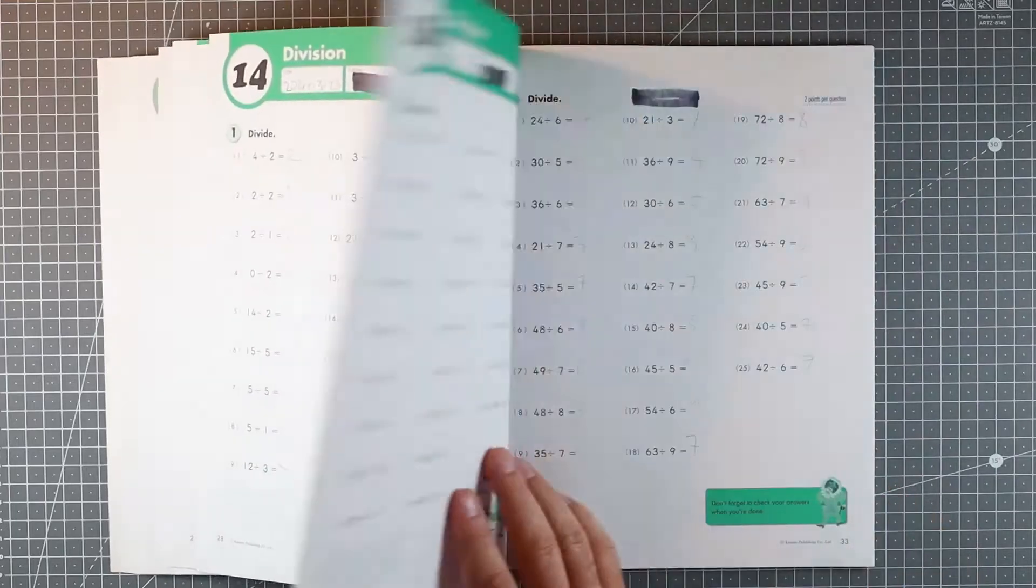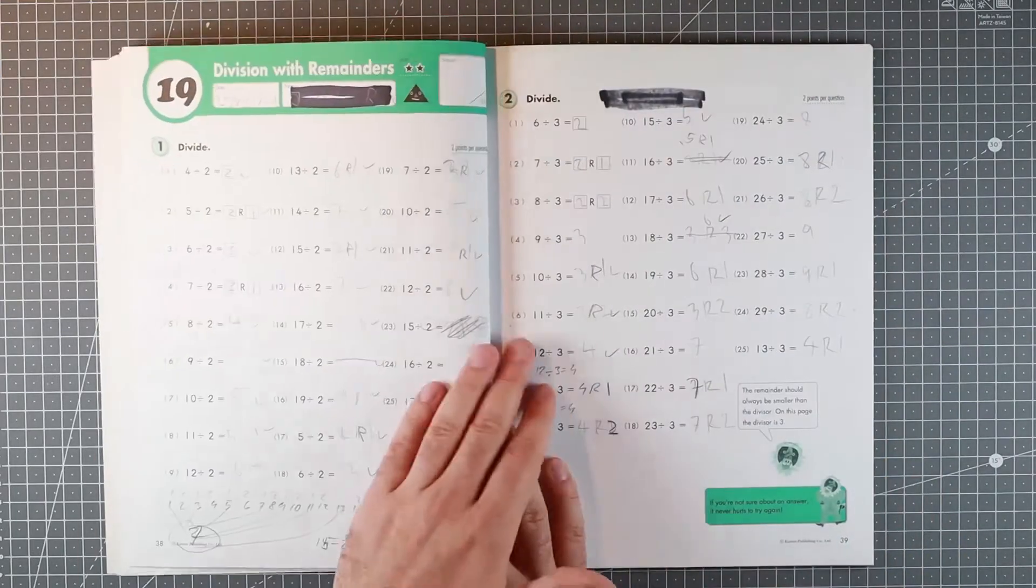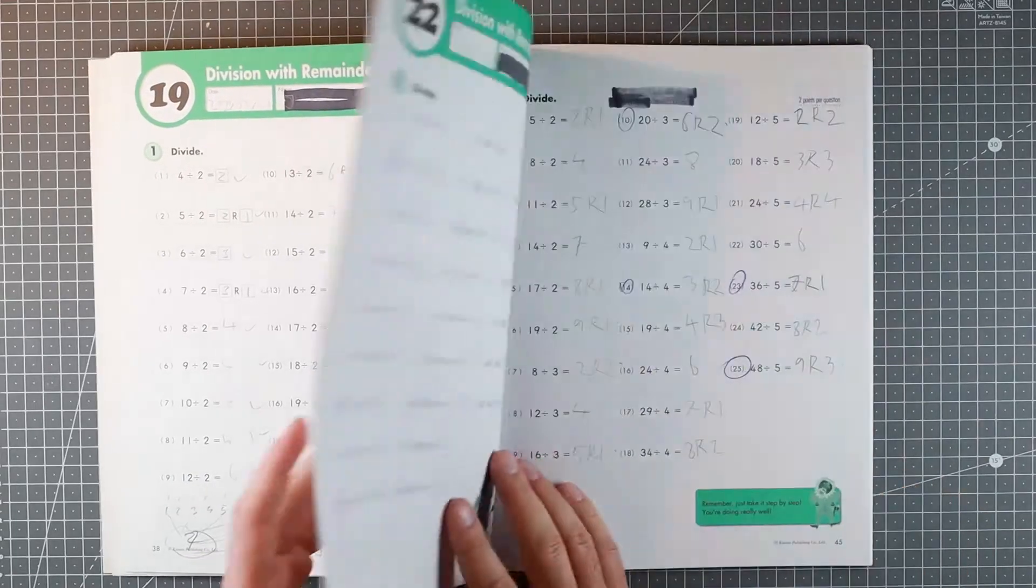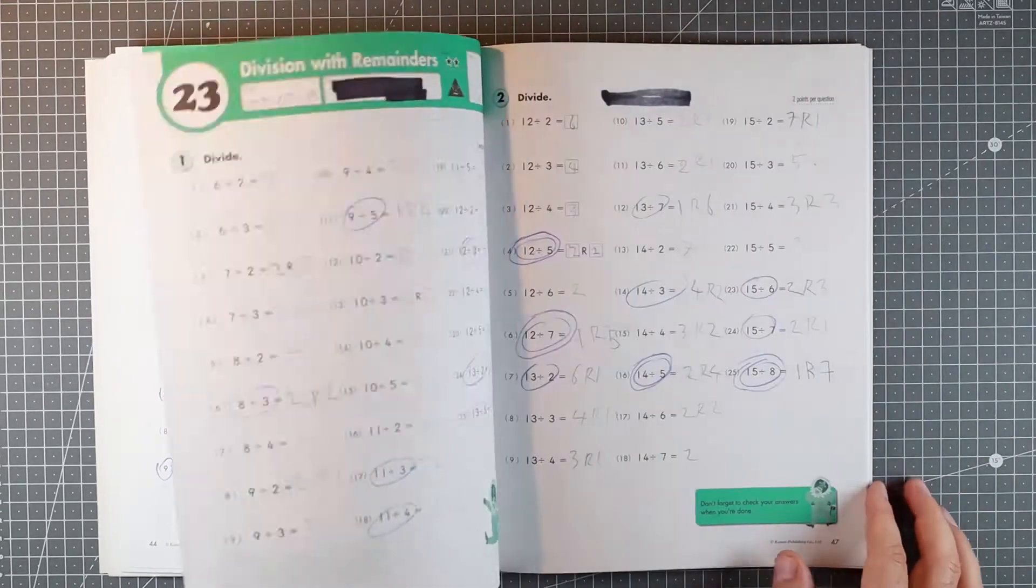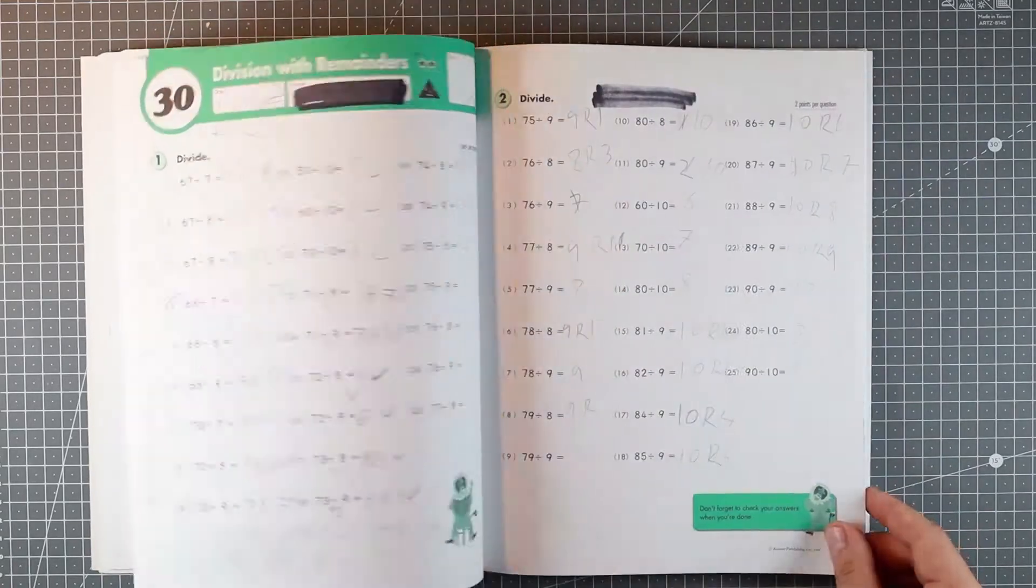And eventually moves after a certain amount of normal division into division with remainders. As you can see, it was quite tough for us when we did that the first time around, but got through it just fine.